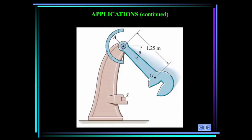The pendulum of the Sharpie impact machine is released from rest when theta equals zero degrees. Its angular velocity omega begins to increase. Can we determine the angular velocity when it is in a vertical position? On which property of the pendulum does the angular acceleration alpha depend? What is the relationship between this property and alpha, the angular acceleration?